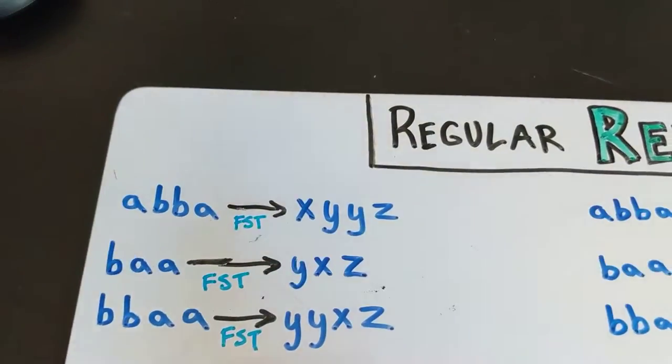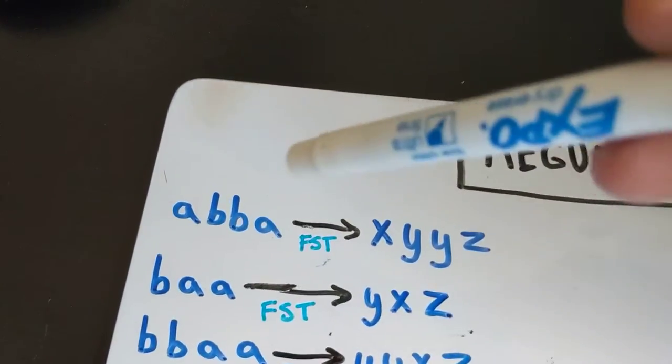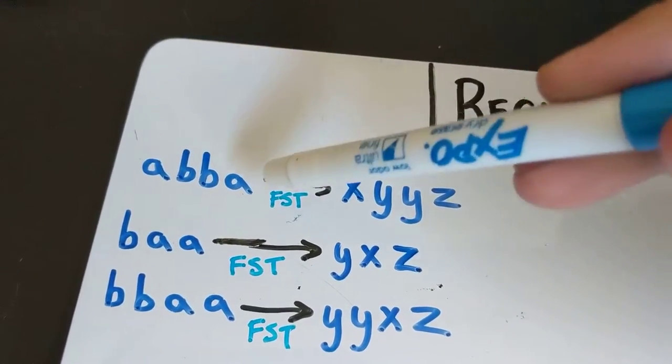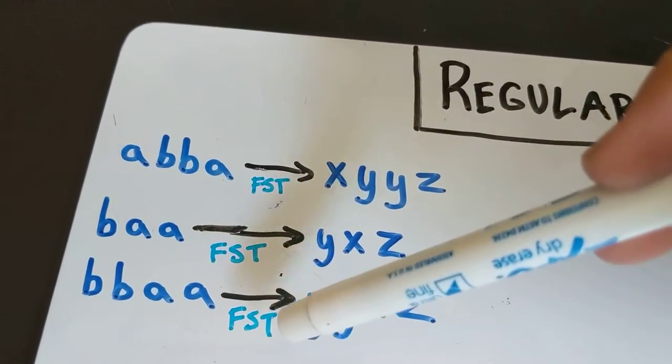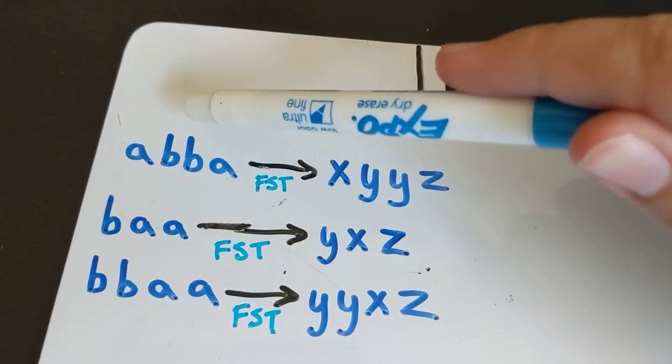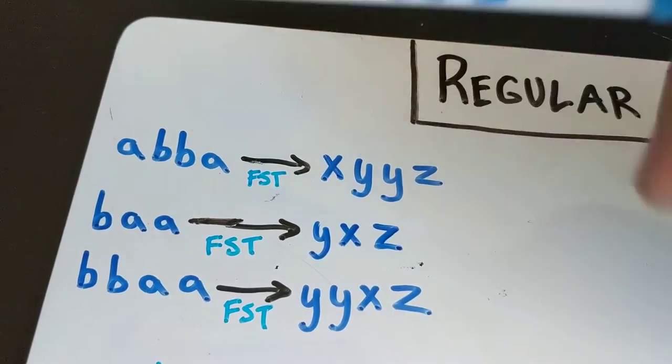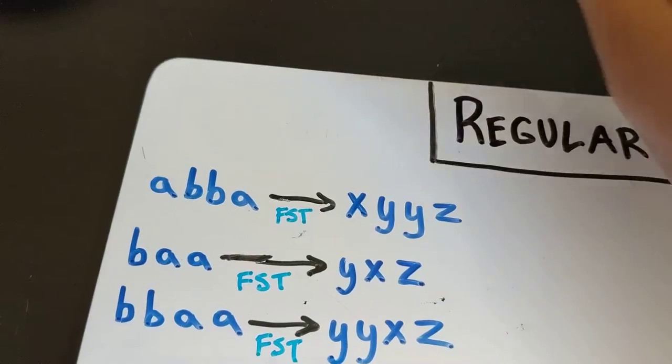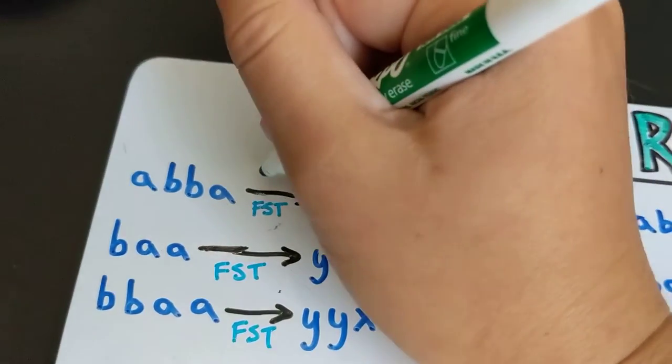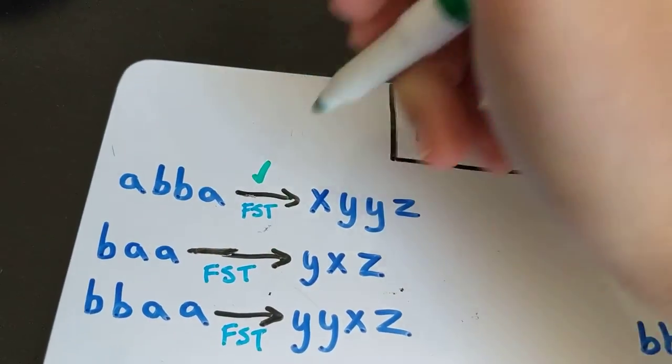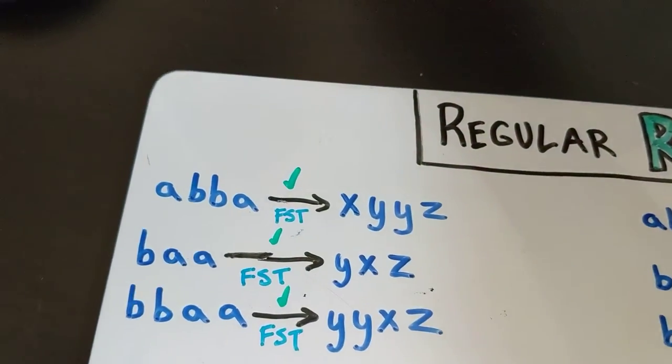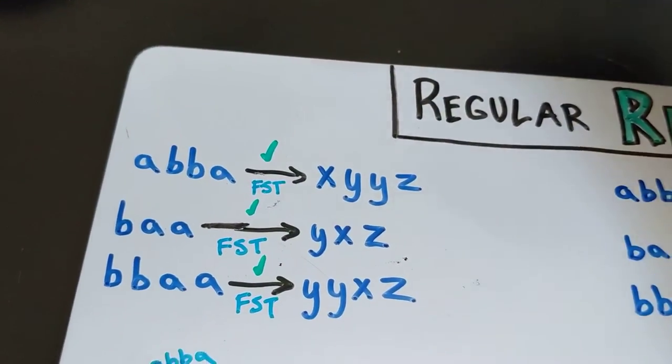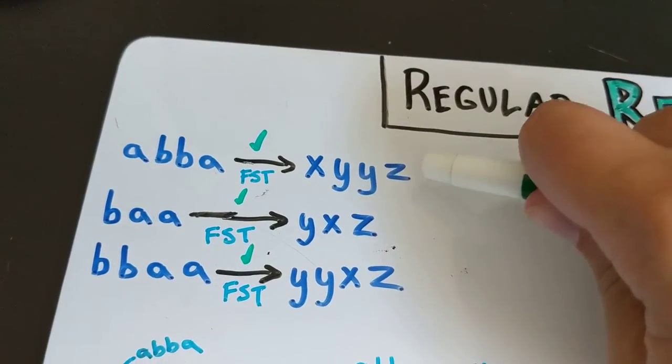In the last lesson we learned that one of the ways we can look at what a finite state transducer is doing is that you feed it a string of a given regular language. It will say whether that string is allowed in your regular language, in your input language. It'll give you a check mark if it's allowed and as a side effect it will spit out another string as output.